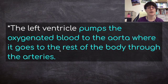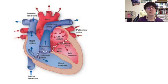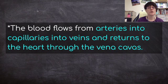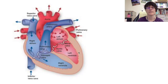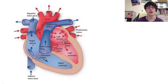The left ventricle pumps the oxygenated blood to the aorta, where it goes to the rest of the body through the arteries. The aorta goes out to all parts of the body carrying oxygen-rich blood. The blood then flows from arteries into capillaries into veins, and capillaries go by the cells — that's where the gas exchange of carbon dioxide and oxygen takes place. It then comes back through the vena cavas and back to the heart, and the process starts all over again.